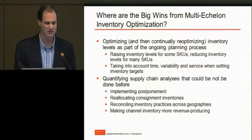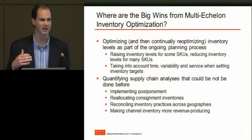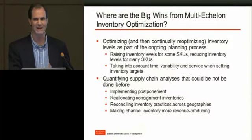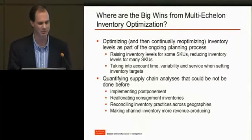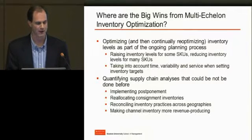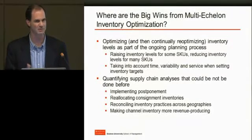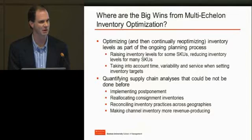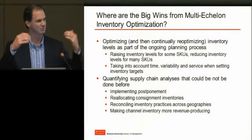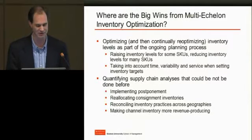The second big benefit is more strategic. We're now able to quantify the benefits of analyses customers simply couldn't do before — and they get many of these essentially for free because they've already got the data in the tactical models. They can abstract up to a strategic layer and analyze problems such as whether to implement postponement, reallocating consignment inventories, reconciling inventory practices across geographies, and making channel inventory more revenue-producing. They're figuring out the right position of inventory in the network given variable lead time problems, and then pushing those strategic solutions back down to rebuild the tactical solution.